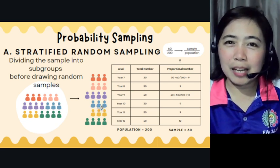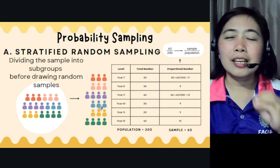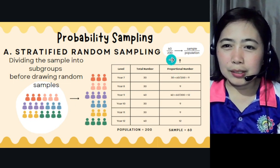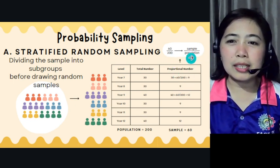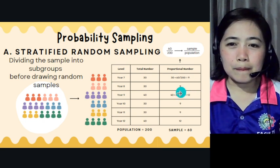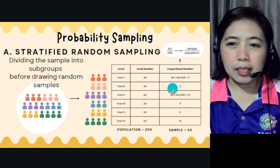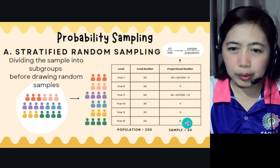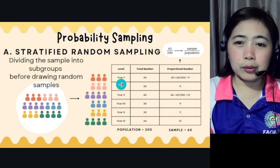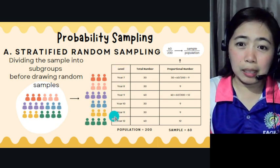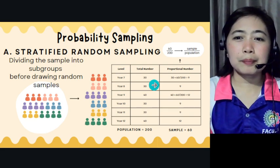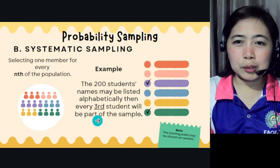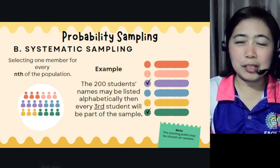So from 200 population, 60 is the sample — saving time and budget, making it cost-effective. The sample is 60 out of 200. You divide by group — by year level or by city — and from each subgroup take a proportional number. You can review the specific slide for the breakdown.